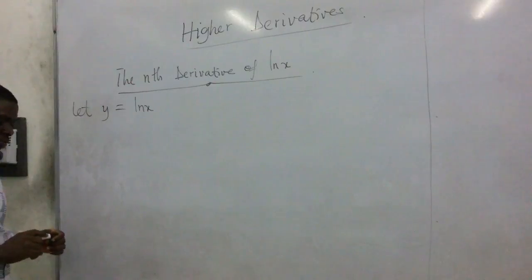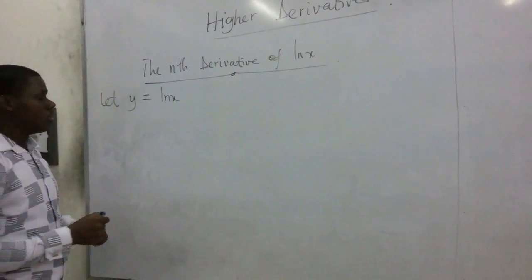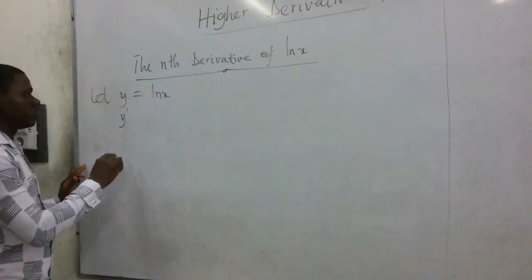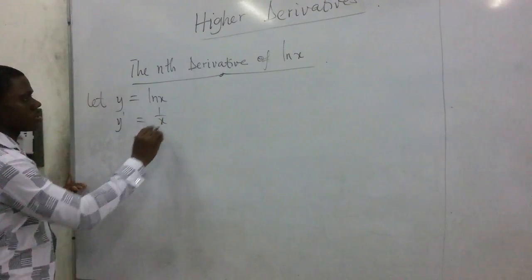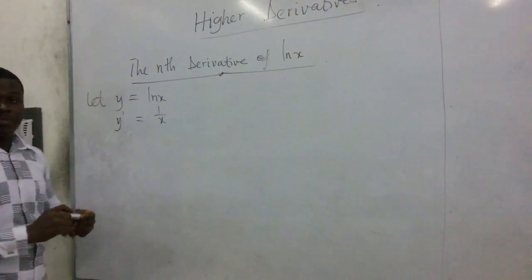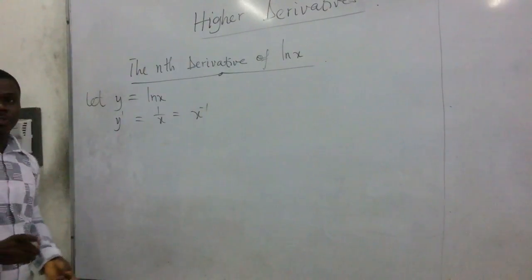So from differential calculus we realize that the first derivative of this is going to give us y' = 1/x. So that's the first derivative, and we can write this one nicely. We want to write it in this form so that subsequent differentiation will be easy for us.